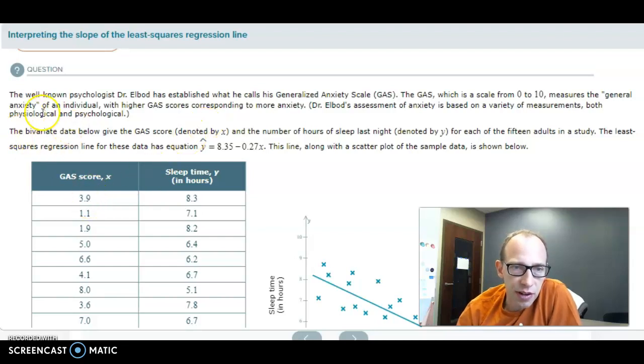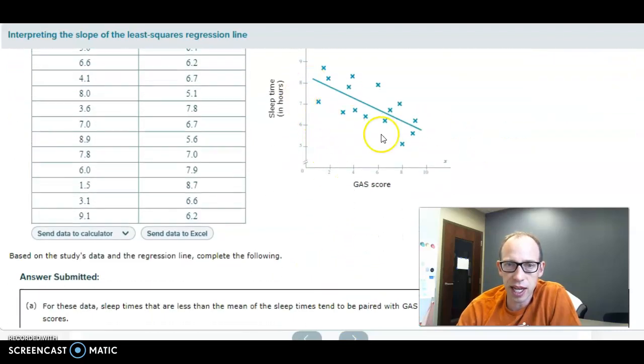It's paired data, often called bivariate data. That means each person in the study—there's 15 of them—each person had a generalized anxiety score paired with that person's sleep time from the night before. You have to have that data paired in order to run this regression or correlation, and we have an equation for our best-fitting trend line.